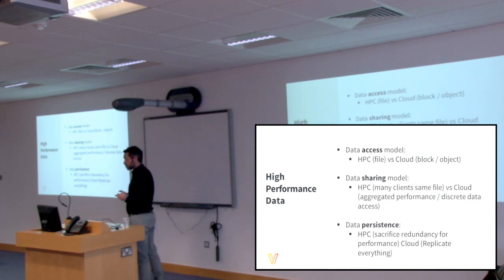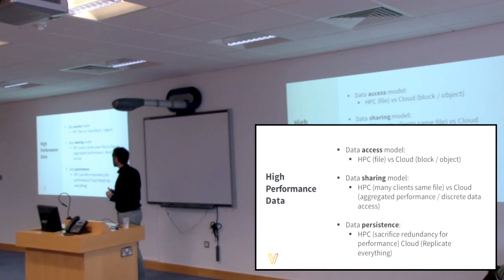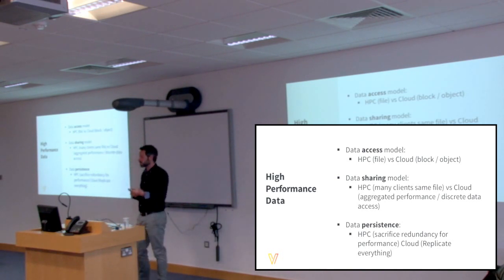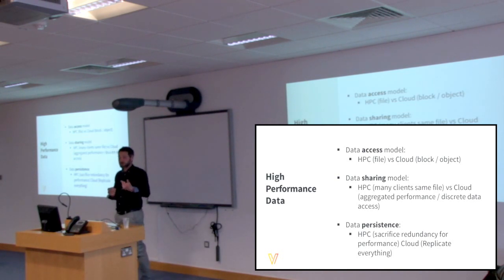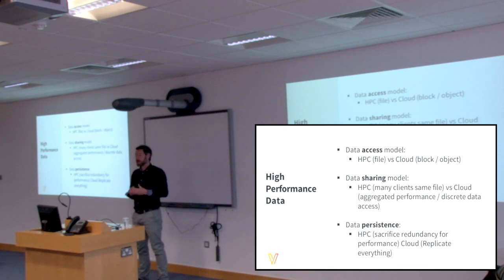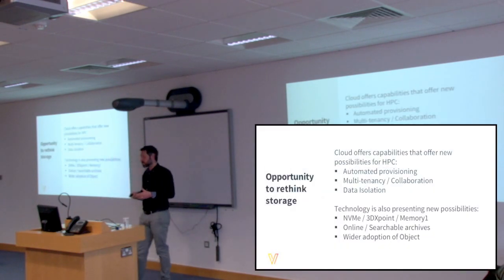The next stage is how do we ensure storage performance is consistent with what HPC environments expect. There are different consumption models. In HPC, data is accessed via a large parallel file system — Lustre or GPFS — that all users have equal access to. In cloud, you're typically provided with a block or object type use case — there's a mismatch there. The sharing model is also different: in HPC, many clients or MPI processes access the same file, while in cloud, everything is discrete and sectioned away on a per-user or per-tenant basis. And in terms of persistence, HPC sacrifices redundancy for performance, whereas cloud replicates everything, which can impact performance. So there's an opportunity to rethink the way storage is provided for research computing.